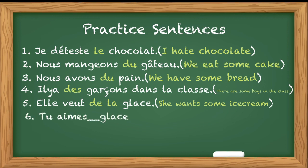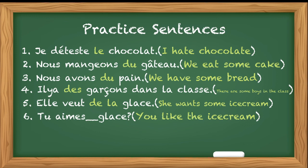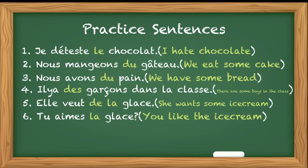Next is: Tu aimes - dash - glace. Do you like the ice cream or do you like some ice cream? Because we are asking somebody's liking and preference here, we are going to use definite article. So you like the ice cream. Tu aimes la glace.